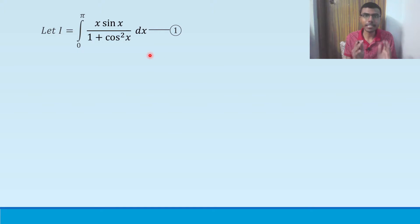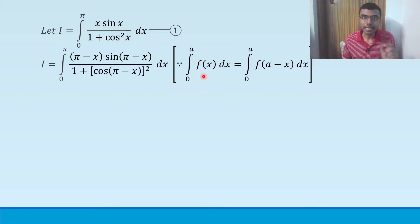Next, in definite integration, there is a property. What is that property? Integral 0 to a, f of x dx is nothing but integral 0 to a, f of a minus x dx. In simple words, this property means that in the same function instead of x, you can also use a minus x with the same limits. Here my a is pi.